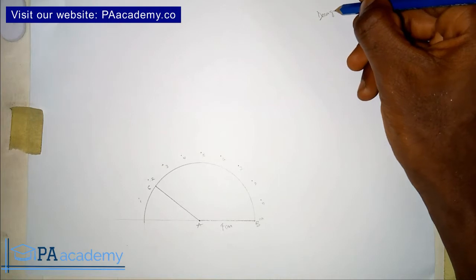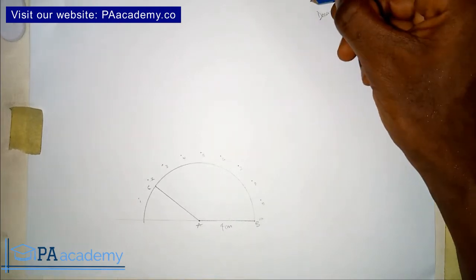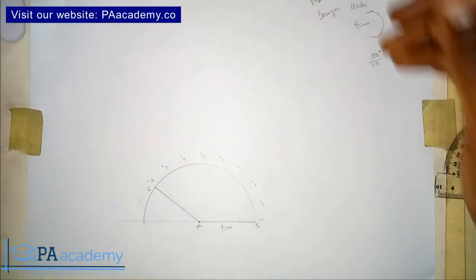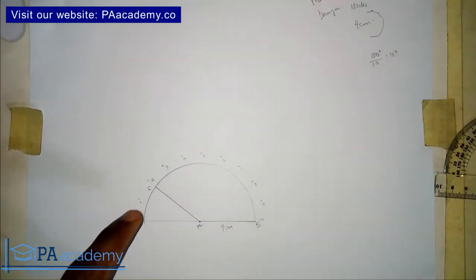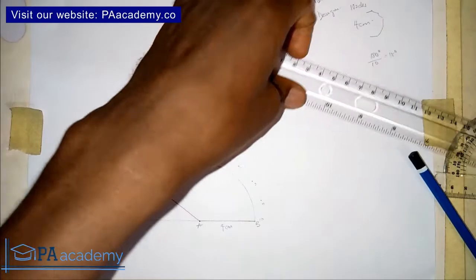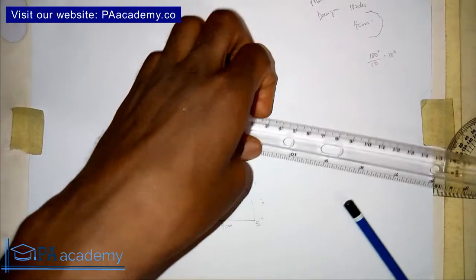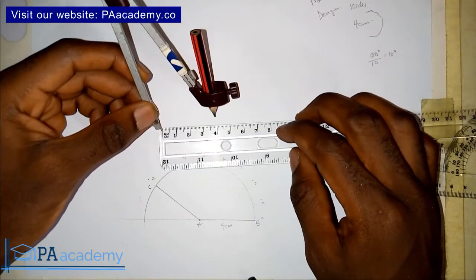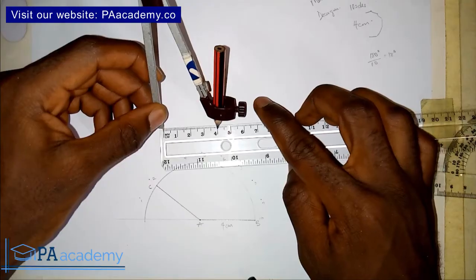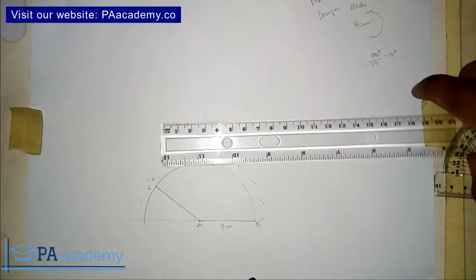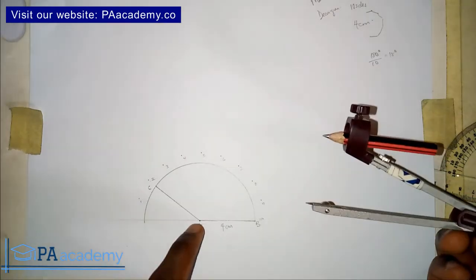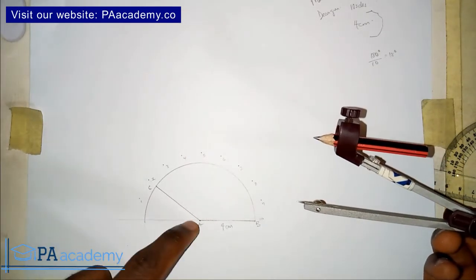This is Method 2 — Drawing a Decagon. We now have 2 sides. Bring your compass back and confirm it is still set to 4 cm, which is the length of the side we are using.